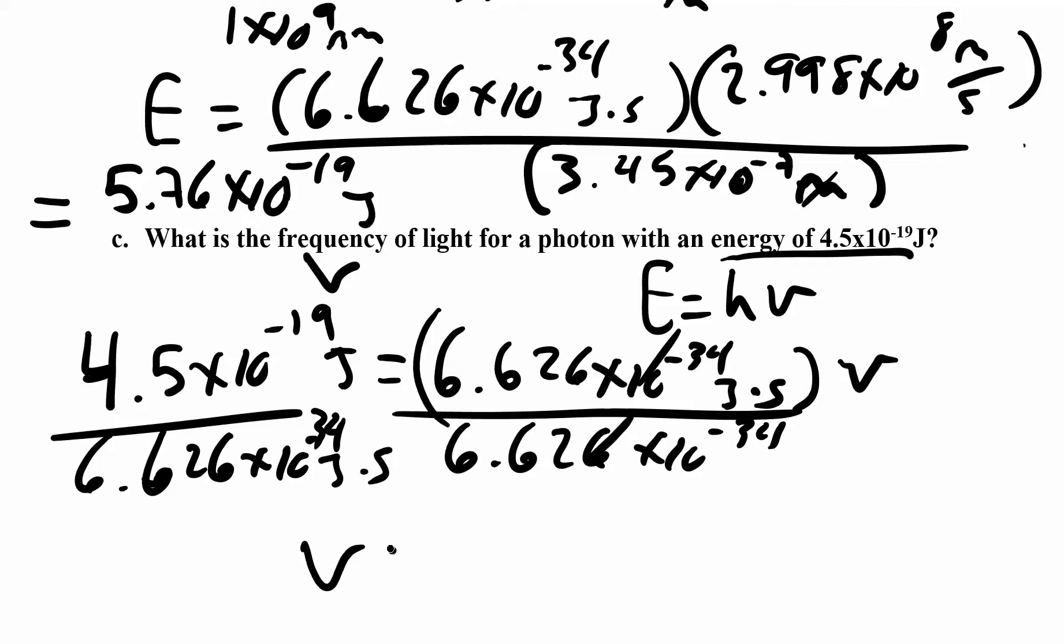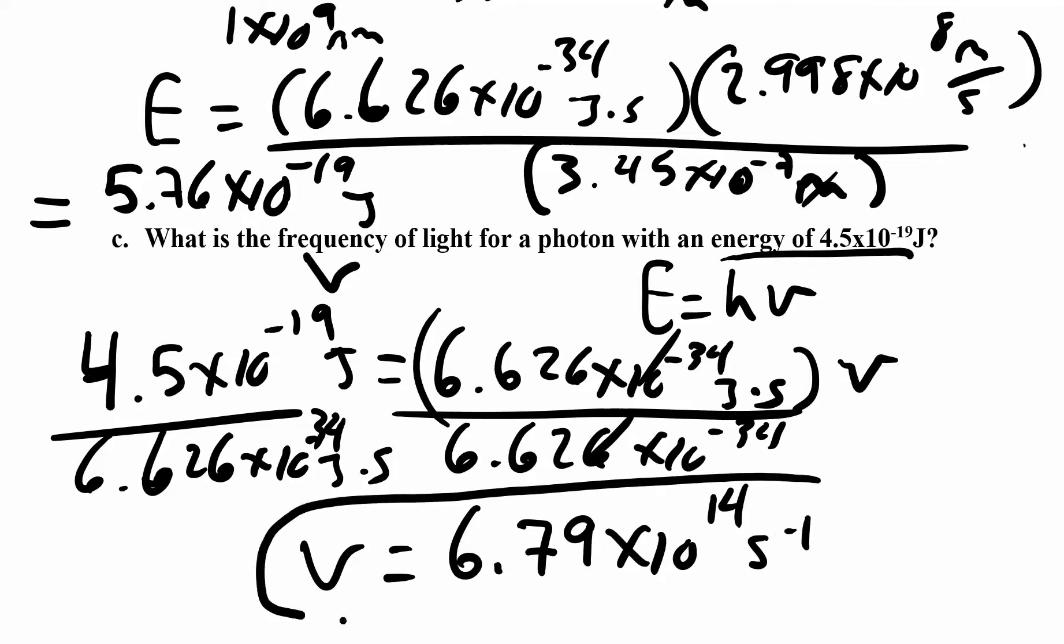I end up with something in 1 over seconds, which makes sense because that is your frequency. So I've got 6.79 times 10 to the positive 14 seconds to the negative 1, 1 over seconds or hertz, whatever kind of units you want to use for that.